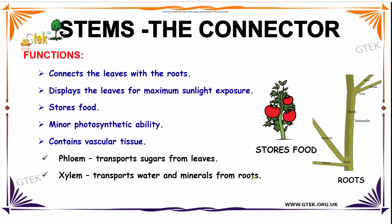The vascular tissue includes Follum and Cyanum. Follum transports sugars from the leaves, whereas Cyanum transports water and minerals from roots. You can see the stem, a node, petiole, this is inter-node, and it is called roots.